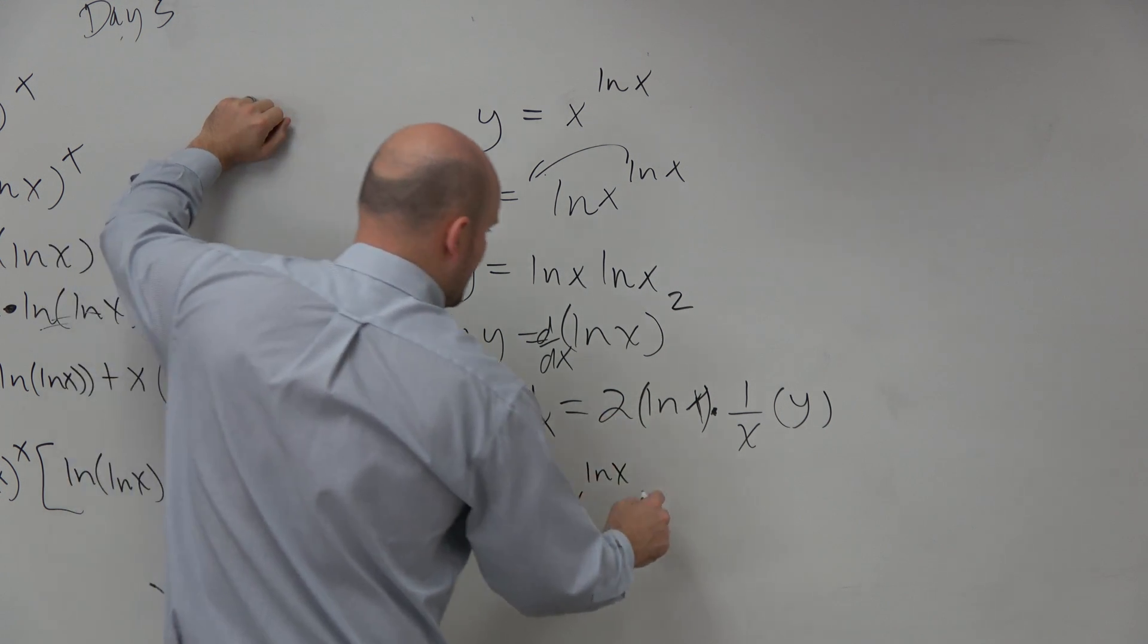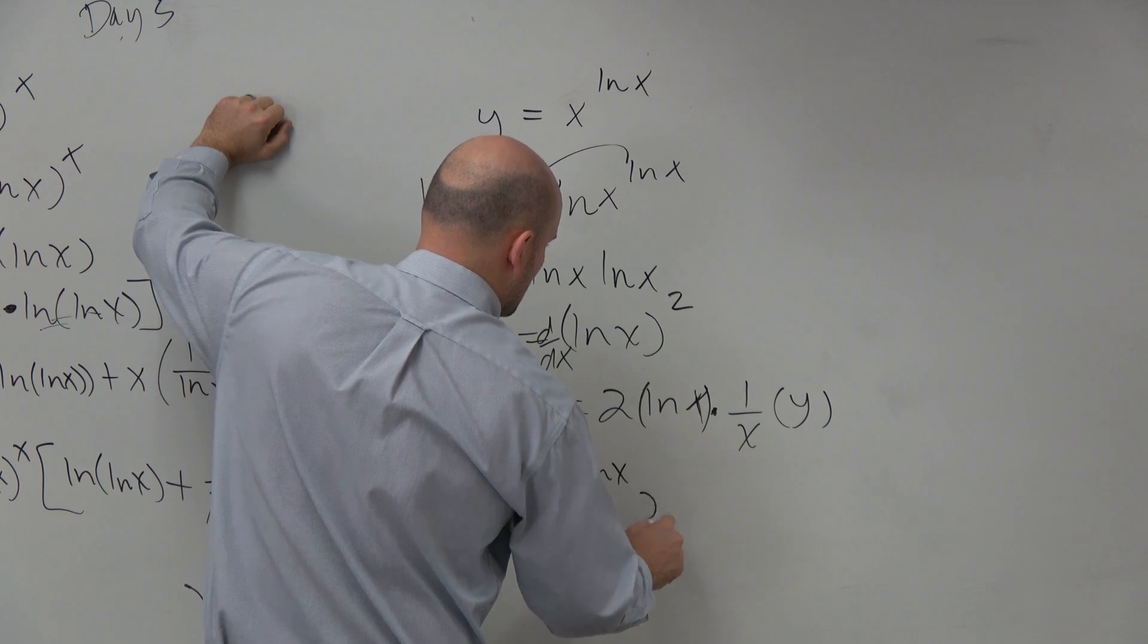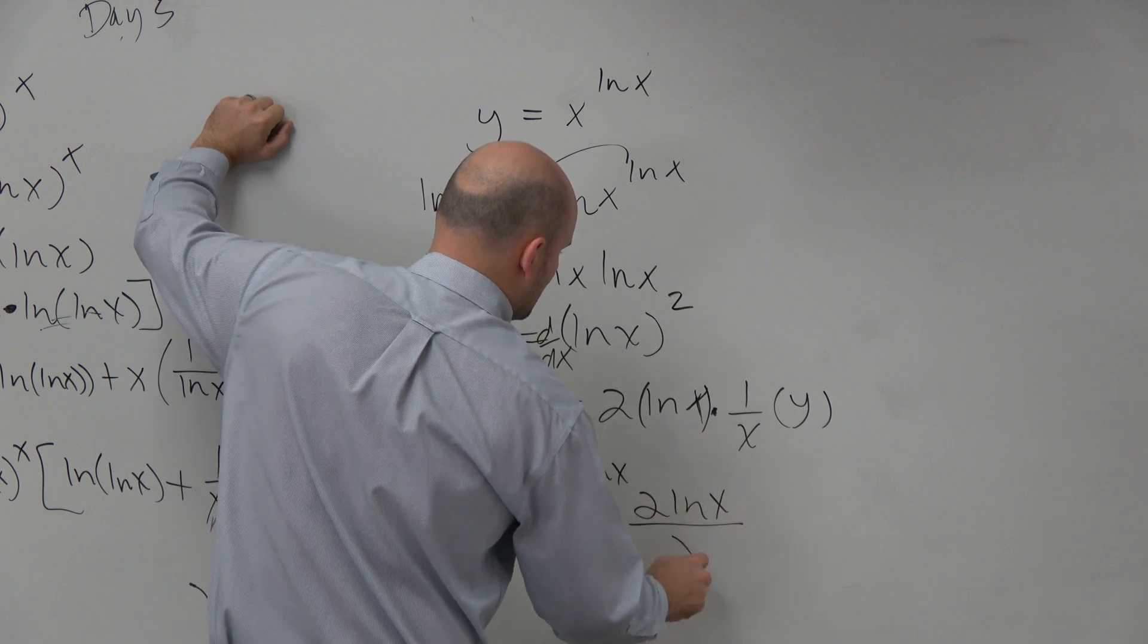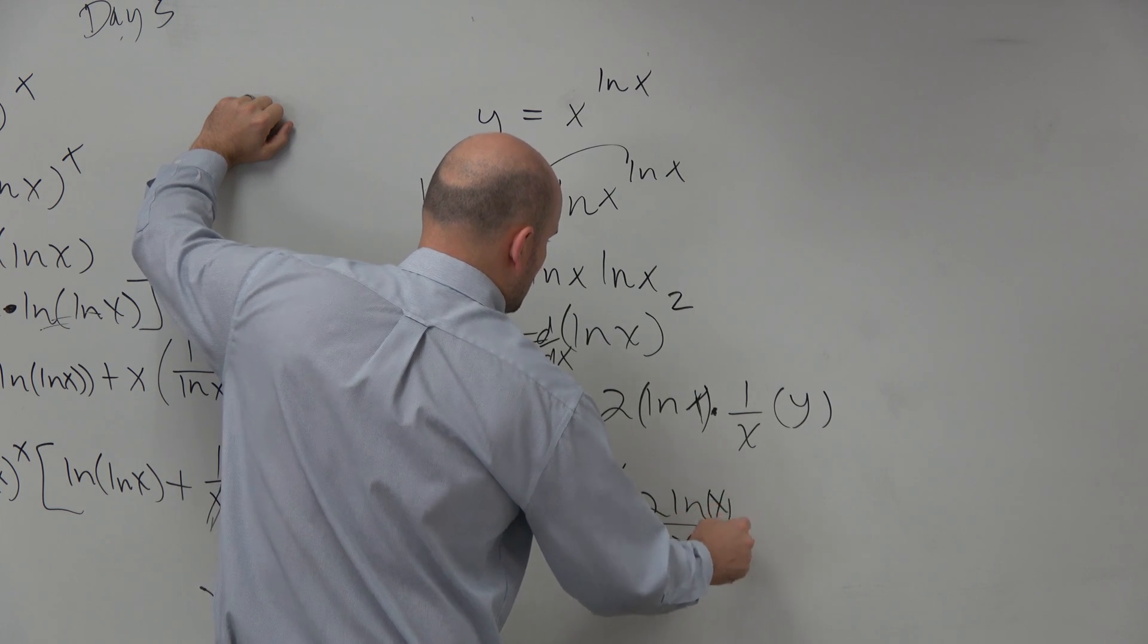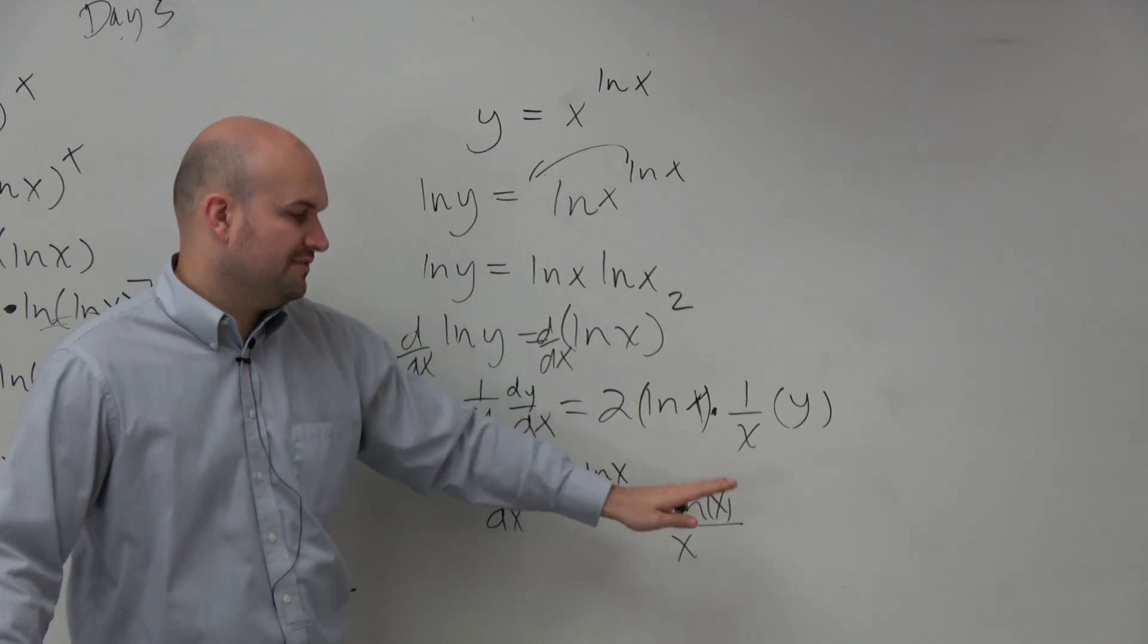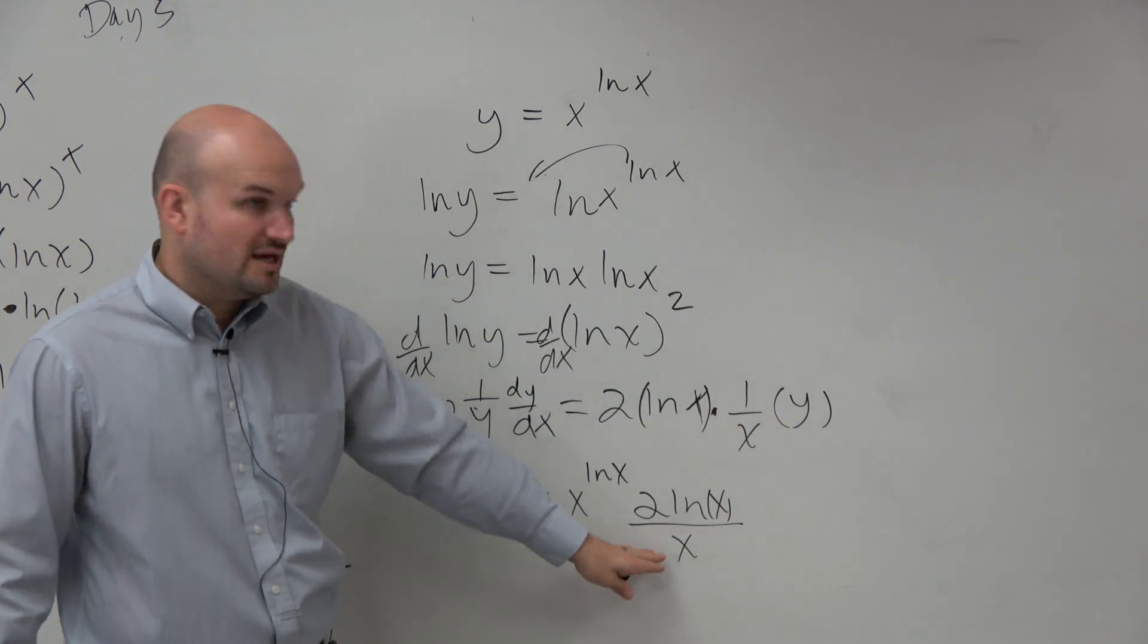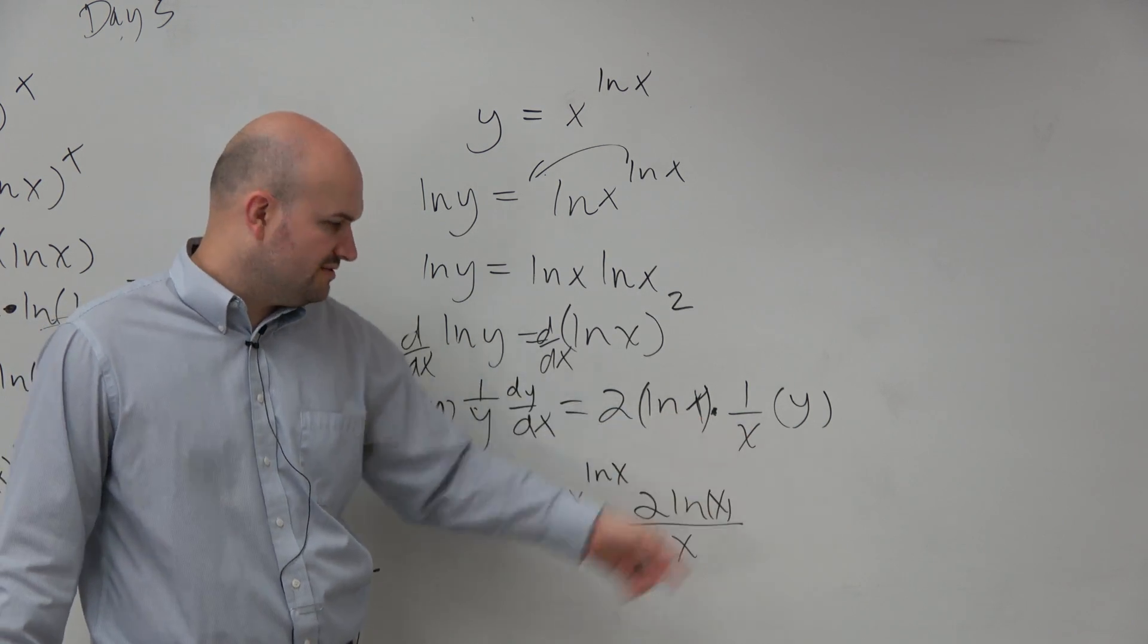And then we'll have a 2 ln of x all over x. Just remember that those x's do not divide out. That's the ln of x, and that's a divided by x, so you can't divide those out.